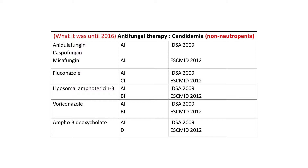This extract summarises the old IDSA guideline last written in 2009 for candidemia, and how the guidelines were until they were very recently shaped by both ESIL as well as IDSA in 2016. The most important thing I'd like to highlight is the role of fluconazole between the IDSA and ESIL guidelines then and now. By then, there was already consensus that the echinocandins were the drug of choice in the treatment of candidemia.